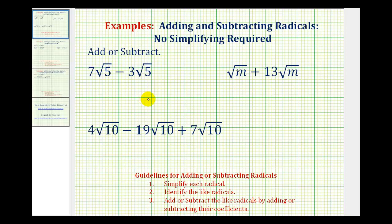In order to add or subtract terms containing radicals, the radical factors must be exactly the same. To add or subtract radicals, we should first simplify each radical, then identify the like radicals, and then we can add or subtract the like radicals by adding or subtracting the coefficients.